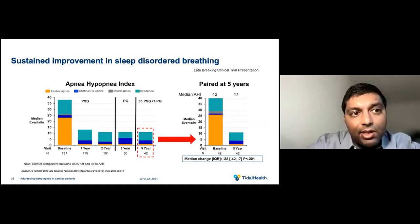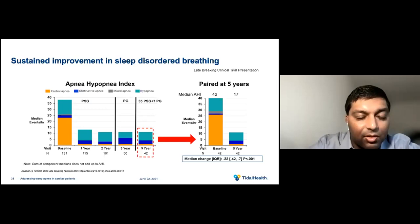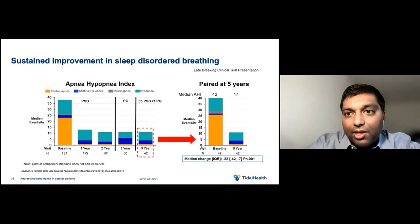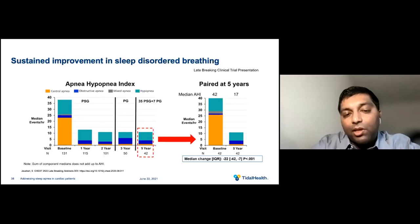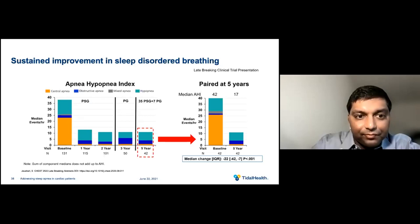New data shows sustained improvement with the Remedē system at five years. The central apnea index decreased substantially at one year, two years, three years, and five years. The five-year data showed the AHI decreased by a median of 24 events per hour, the central apnea index also reduced by a median of 24 events per hour, and the Epworth Sleepiness Scale decreased significantly from a median of 11 at baseline to 4 at five years. This shows sustained improvement with Remedē therapy five years down the line.